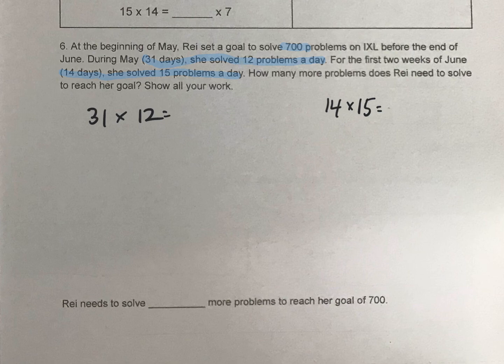So we need to do 31 times 12 and 14 times 15, however you want to. So you could, for 31 times 12, you could do doubling and halving there to make it easier. Or you could just go straight into maybe partial products if you can do that.